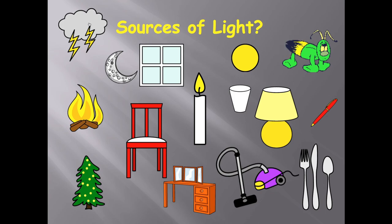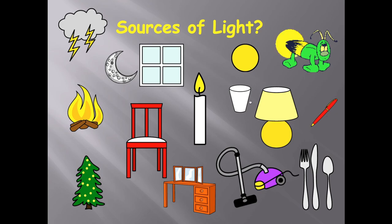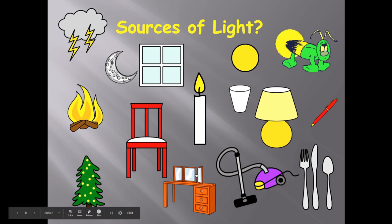Over here we've got two things: the cloud and the lightning. Here we've got the moon. Here we have a window — the glass allows light through it, so that would be a transparent object, whereas the window frame does not let light travel through it, so that's an opaque object. Over here we have the sun, which gives out light — that's a luminous object. Here we have a firebug, which can give out light. A fire and the wood before it burns. The chair, a candle — the wax and the flame — a glass, a lamp with a bulb, a lampshade and a body, a pen, cutlery, a hoover, a desk with a mirror. The mirror reflects light.